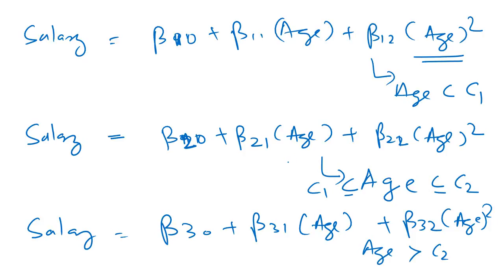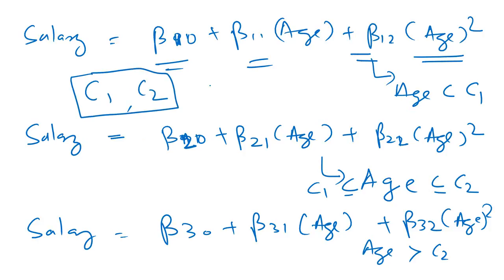So instead of fitting a single polynomial regression equation to the data, we fit three polynomial regression equations, which increases the performance of the model — that is the idea of regression splines. We have more parameters to determine. With a single polynomial regression we had just 3 beta parameters; now we have 9. We also need to find out what C1 and C2 are — what the thresholds are and how many thresholds there should be.